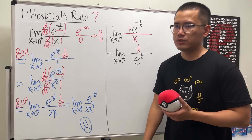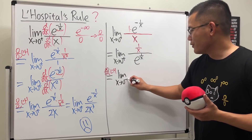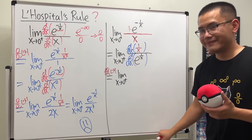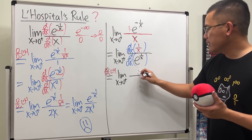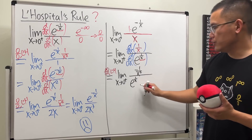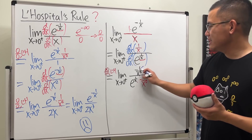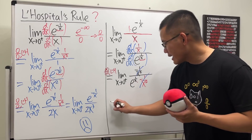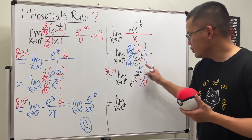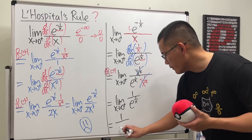Infinity over infinity — that's good, we can use L'Hôpital's rule. So we differentiate top and bottom. The derivative of 1 over x is negative 1 over x squared. The derivative of e to the 1 over x is e to the 1 over x times negative 1 over x squared — the same as the derivative of the top. So the negative 1 over x squared terms cancel completely, and we get the limit as x approaching 0 plus of 1 over e to the 1 over x.